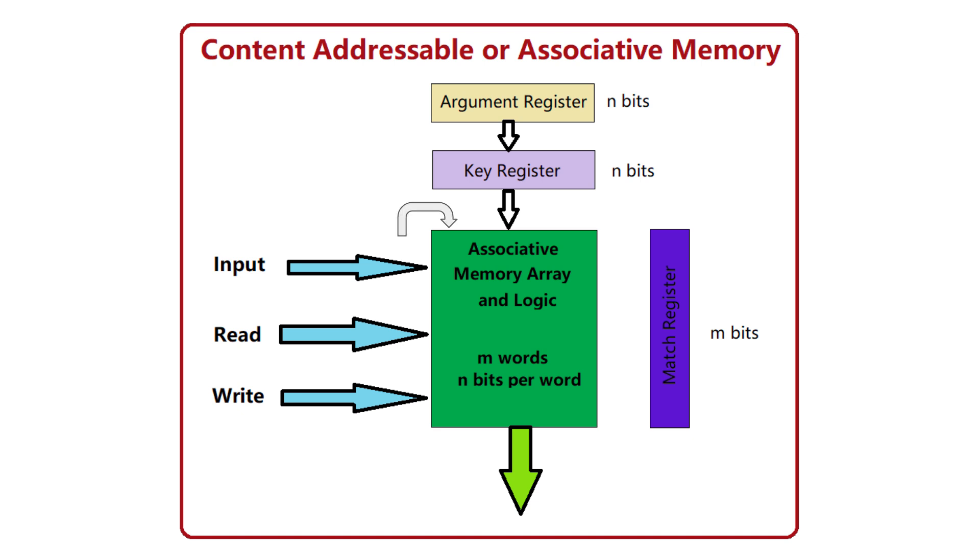The associative memory array is the heart of the system. It's an array of m words, each n bits wide. Each row in the array represents a word stored in the associative memory. This is where all the data is stored.